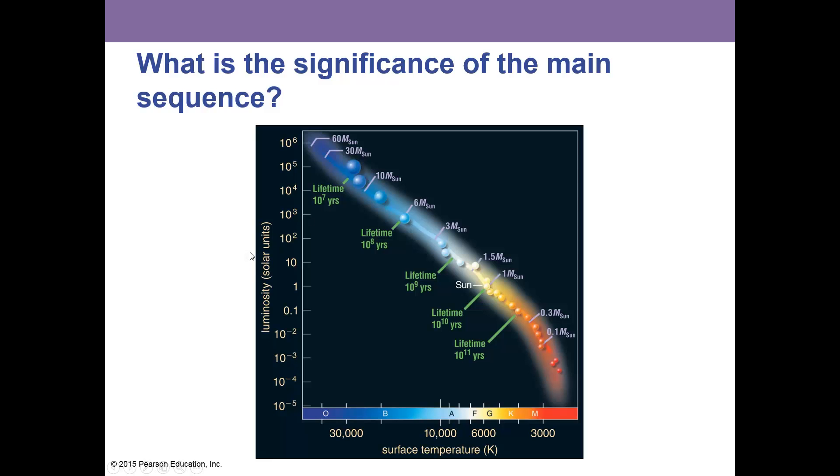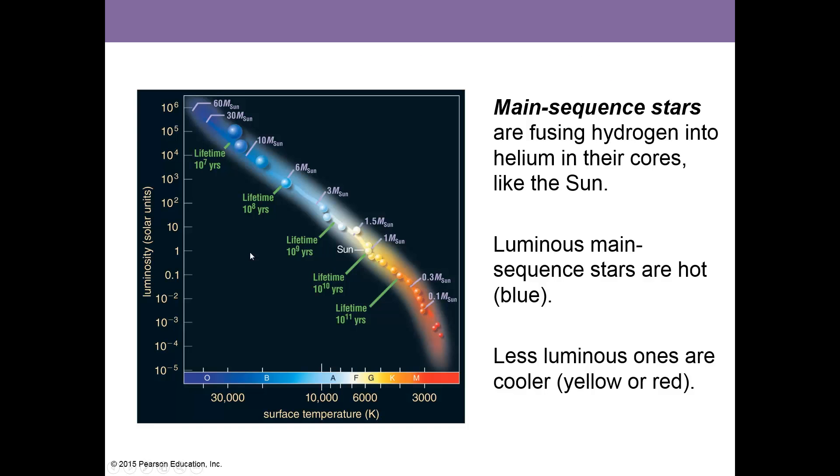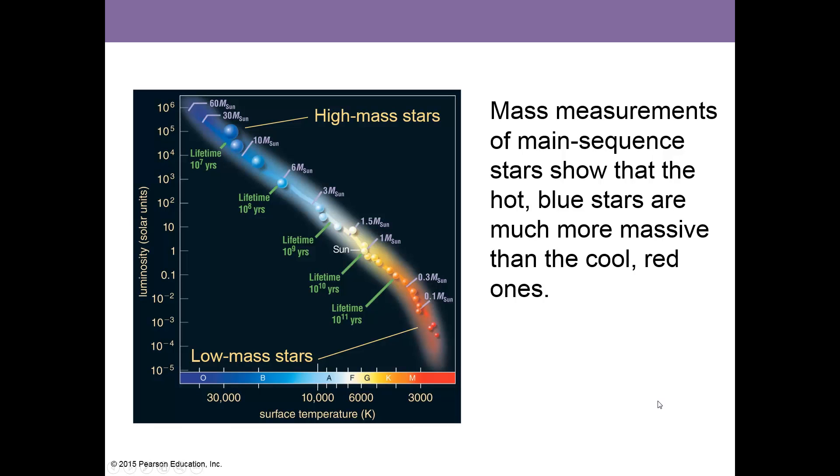What is the significance of the main sequence? Main sequence stars are fusing hydrogen into helium in their cores, just like the Sun. Luminous main sequence stars are hot, they're blue, and the less luminous ones are cooler, yellow, or red. Mass measurements of main sequence stars show that the hot blue stars are much more massive than the cool red ones.